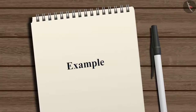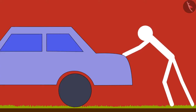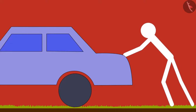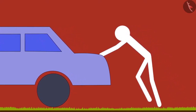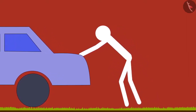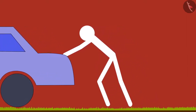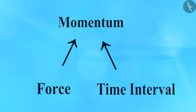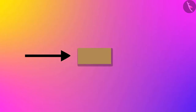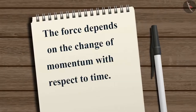Consider an example of pushing a car. When a person gives a sudden push to the car, it hardly moves. But if the person continues pushing for some time, the car may gradually gain some acceleration and start to move. This shows that the change in momentum of a body does not only depend on the force, but also depends on the time for which the force is applied.